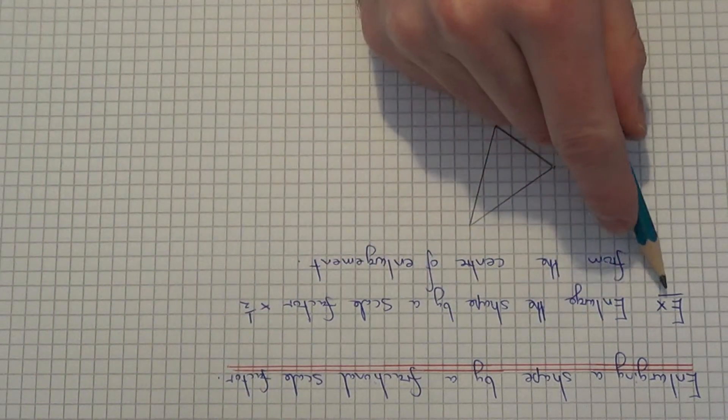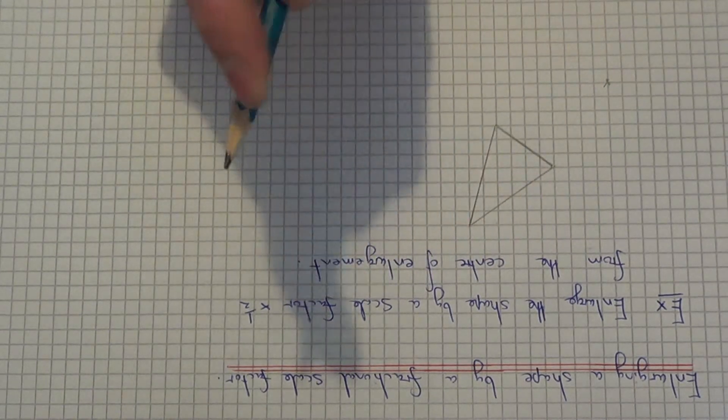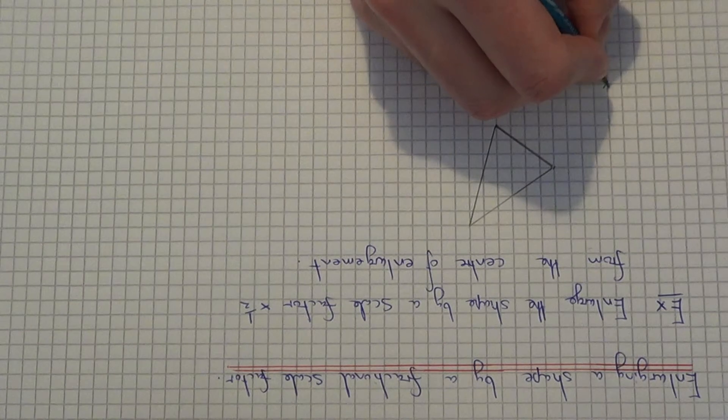So let's have a look at the example. We've got enlarge the shape by a scale factor times a half from the centre of enlargement which is down here.